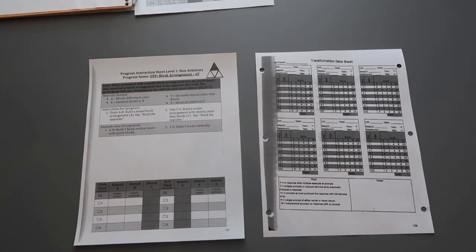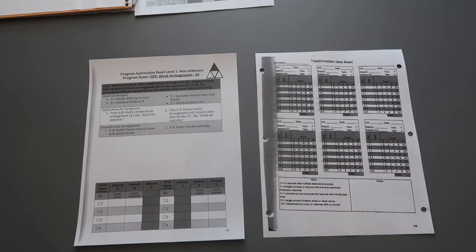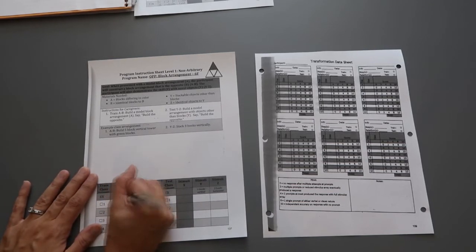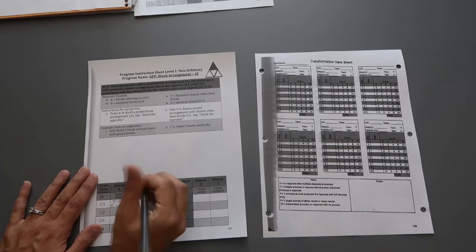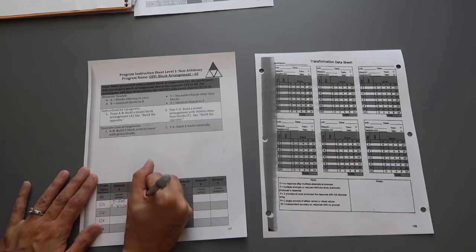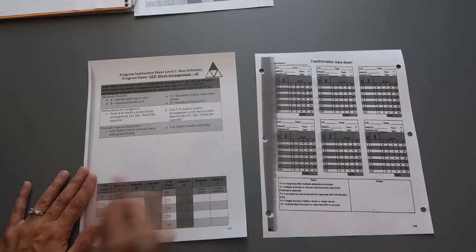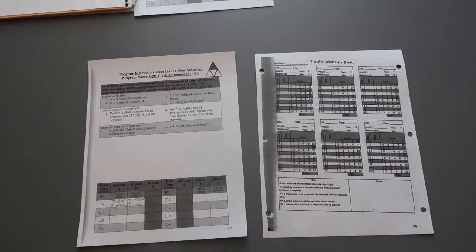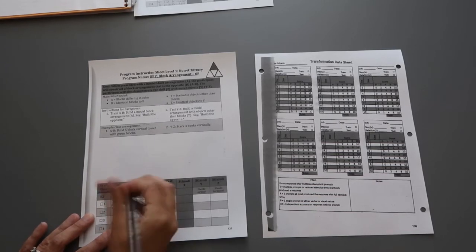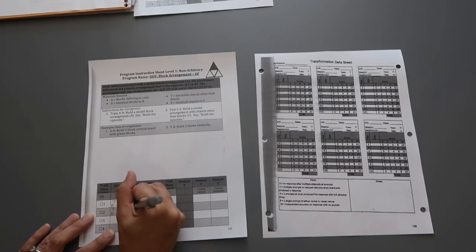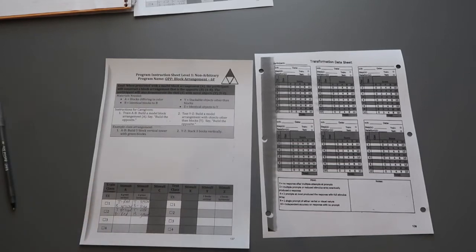For this one you're just using variations of blocks and you are building something in front of yourself, then putting another two blocks that are exactly the same in front of the participant and saying 'build the opposite.' For stimuli one, I might put a red block on top and a yellow block on bottom. Then for the top on the participant's side, they would need to put a yellow block to be the opposite, and a red block on bottom. The next one might be yellow on top and red on bottom, and then they would need to do red on top and yellow on bottom to get that opposite.